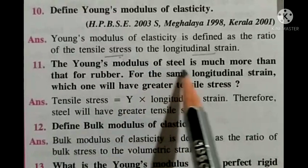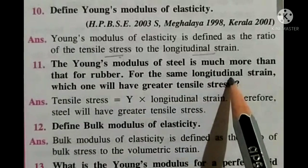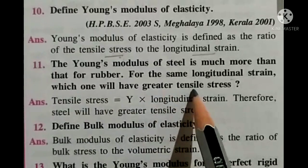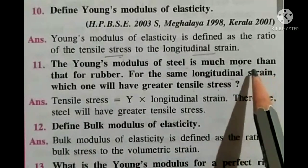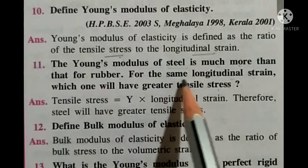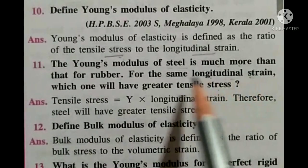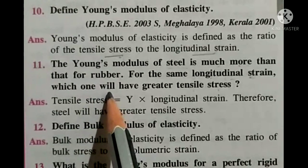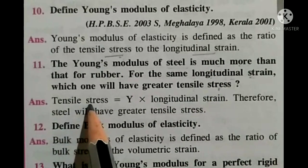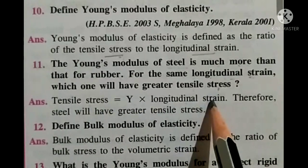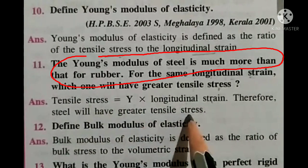Question number eleven: Young's modulus of steel is much greater than that of rubber. For the same longitudinal strain, which will have greater tensile stress? We know that tensile stress equals Y (Young's modulus) multiplied by longitudinal strain. Therefore, since Y is greater for steel, steel will have greater tensile stress.